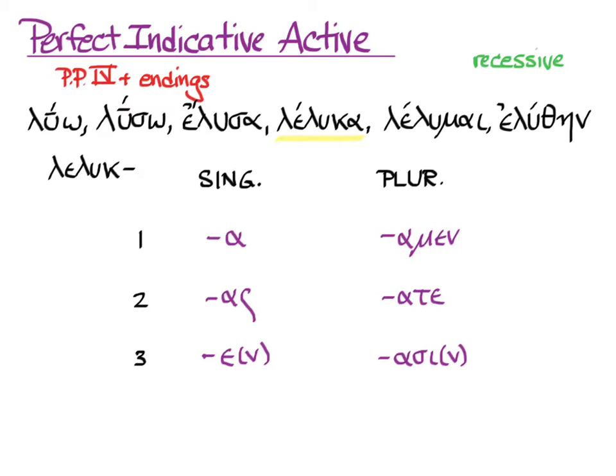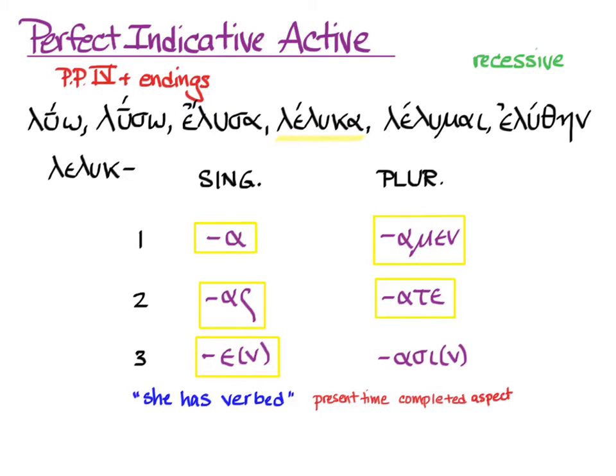Accent is recessive. The default translation for the perfect indicative active is she has verbed for present time and completed aspect. Notice that, apart from the third person plural, these are endings you know from the aorist indicative active. Even the third person plural has the same person marker that you already know from the present and future third person plural.